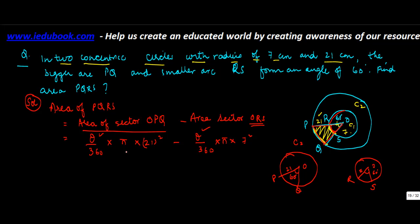We know theta is 60 degrees, same in both cases. So we can take theta by 360 and π as common. You write 60 over 360 times 22 over 7, this is the common element.